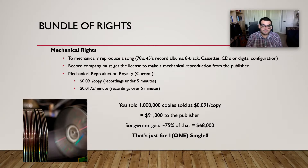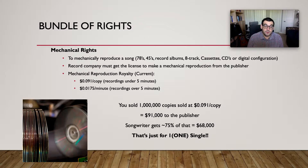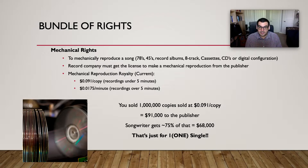Let's start with mechanical rights. Mechanical rights are the right to mechanically reproduce a song in the form of records — LPs, 78s, 45s, record albums, singles and albums, eight-tracks, cassettes, CDs, or in the digital world. Record companies must obtain a license to make a mechanical reproduction from your publisher. The royalty rates for mechanical reproductions are as follows: if your recording is under five minutes long, you receive $0.091 cents per copy of that song. If your song is over five minutes, you receive $0.0175 cents per minute. So it's almost better to keep under five minutes per song.